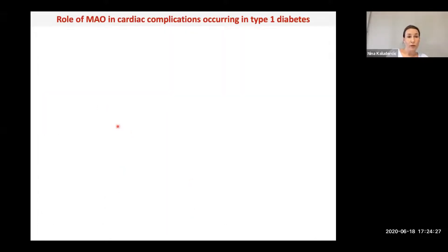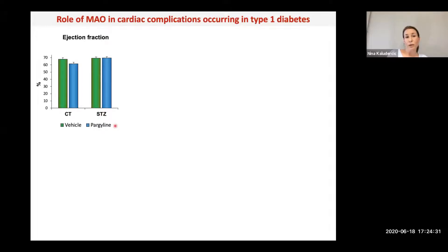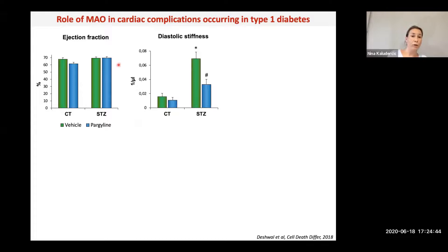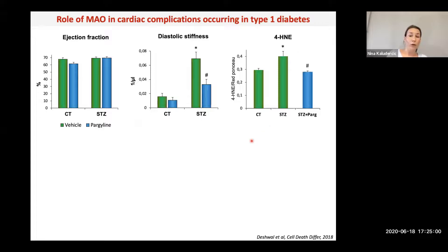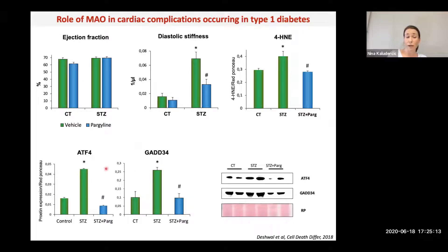We also looked at whether these findings hold true in vivo. Mice were injected with streptozotocin for 12 weeks. After 12 weeks of hyperglycemia, ejection fraction was not affected, but we saw an increase in diastolic stiffness suggesting diastolic dysfunction, which was partially but significantly prevented by MAO inhibition. As expected, we saw an increase in oxidative stress and lipid peroxidation that was prevented by pargyline. Another hallmark of diabetic hearts is an increase in ER stress — markers ATF4 and GADD34 were both significantly upregulated in diabetic hearts but reduced upon MAO inhibition.